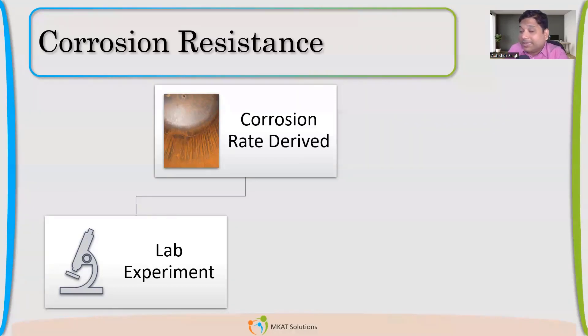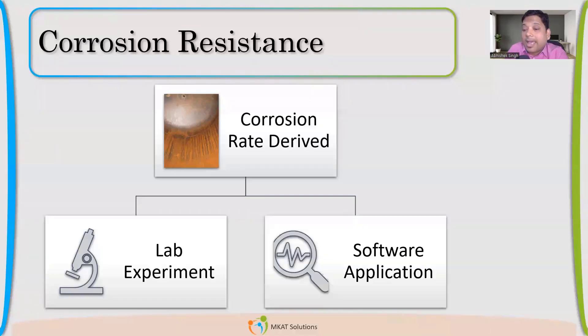Okay. Making sense guys? Are you with me? So, the lab experiment and software application and previous data. Software application is nothing but collection of previous data. So, with these two, we can determine the corrosion rate.